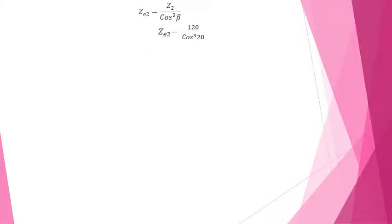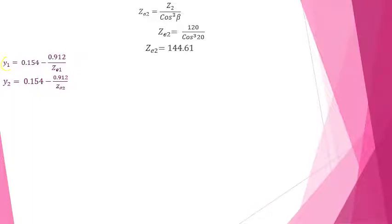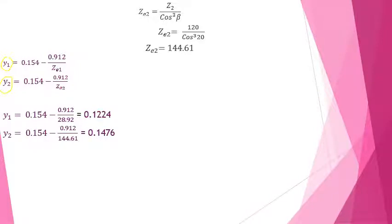For Ze2, it will be Z2 / cos³(beta) = 120 / cos³(20°) = 144.61. That is the formative number of teeth on the gear. Using these values of Ze1 and Ze2 in the Lewis form factor equation, Y1 = 0.1224 and Y2 = 0.1476.